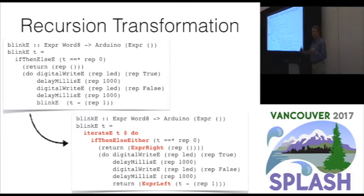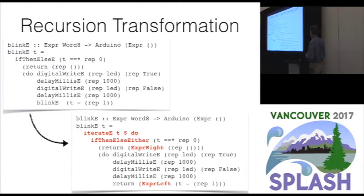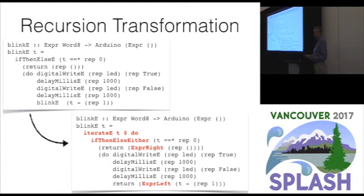The paper goes through the recursive transform in detail. In general, similar steps move what we call done and step operators through the code. Any place we're going to exit the loop, we return an Expr Right — indicating we exit. If we return an Expr Left, we make a recursive call back in. The semantics of iterate are such that if it returns Expr Right it exits; if it returns Expr Left it goes through the loop one more time. The plugin is thus able to transform from the deep recursive form into the iterative form usable inside the DSL.